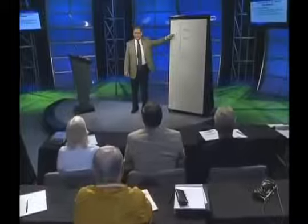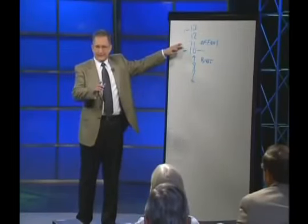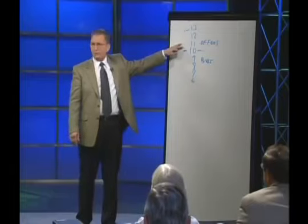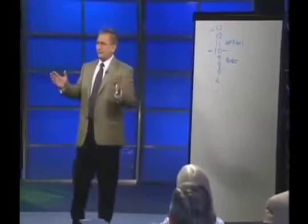If you and I enter into a trade at 10 — you're the seller, I'm the buyer — the next tick is going to make one of us a winner and one of us a loser. If the next tick is 9, the amount of money flowing into your account is coming directly out of mine. If the next tick is 11, the amount flowing into my account is coming directly out of yours. Every trade has two diametrically opposing beliefs about what the future is going to be.